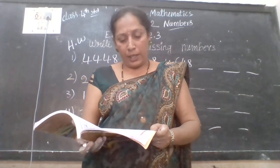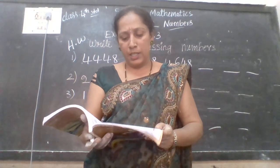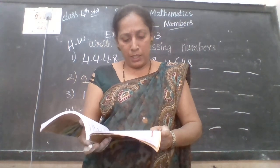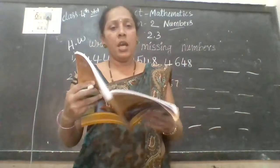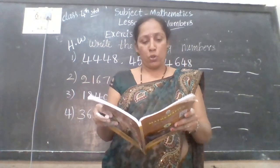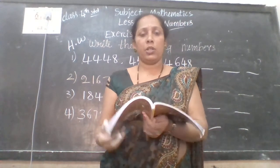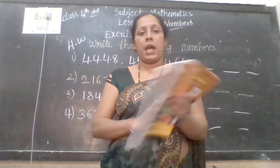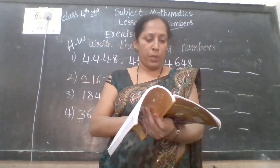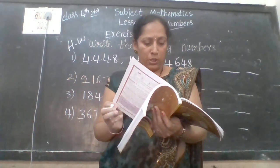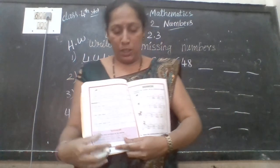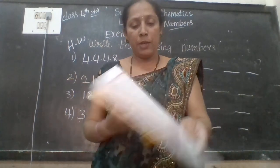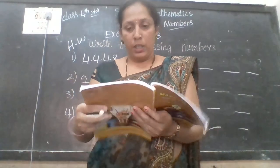Do it yourself. Write the next number in the series — A, B, C are the given questions. Write your own. Understood, children? I will check in the assignment group. Please do everything and submit to the assignment group. Do these activities, page number 32. We have to do all these things and submit to the assignment group. Okay, thank you, children.